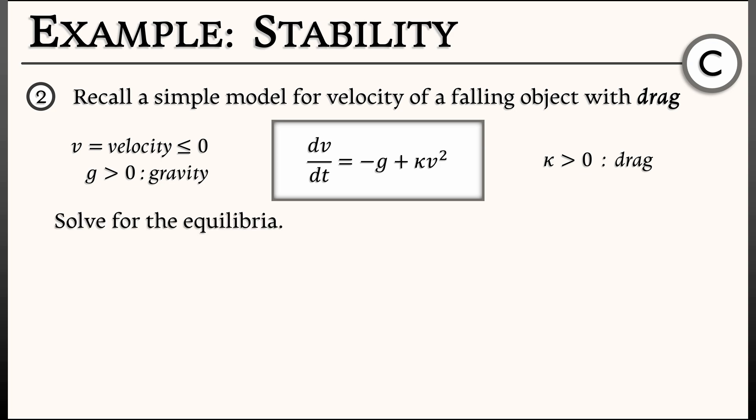How do we deal with this system? The first thing we do, the first thing we always do, is we solve for the equilibrium. In this case, what do we get? dv/dt is negative g plus kappa v squared, set that equal to zero, solve for v. Well, that's easy. Move the negative g over to the other side, divide by kappa, take the square root, and we get two equilibria. The first is at v equals square root of g over kappa. But that's not the only one. We can also take the negative square root and get v equals minus square root of g over kappa.